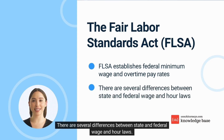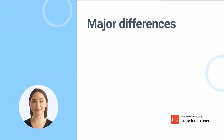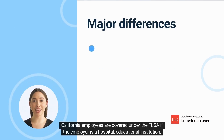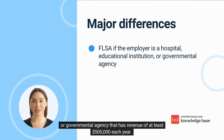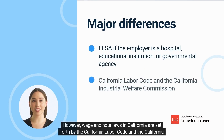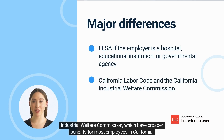There are several differences between state and federal wage and hour laws. California employees are covered under the FLSA if the employer is a hospital, educational institution, or governmental agency that has revenue of at least five hundred thousand dollars each year. However, wage and hour laws in California are set forth by the California Labor Code and the California Industrial Welfare Commission, which have broader benefits for most employees in California.